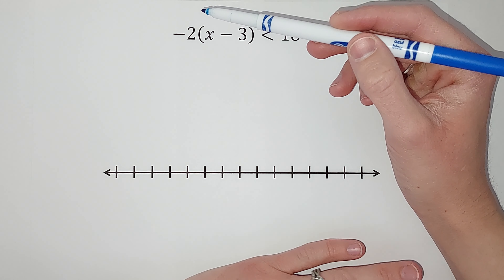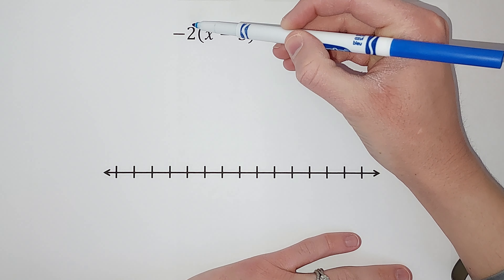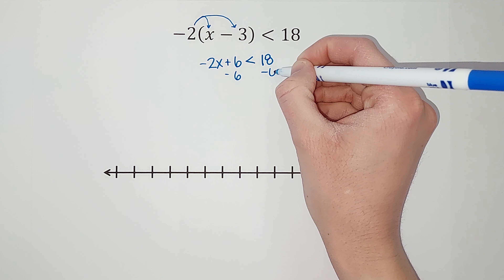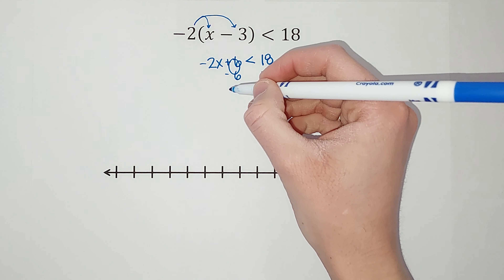Order of operations tells us to start with what's inside our parentheses. These aren't like terms, so I can't subtract them. What I can do to get around that is distribute this negative 2 in — that negative 2 is being multiplied. So I get negative 2 times x, which gives me negative 2x, and then negative 2 times negative 3, which gives me positive 6.